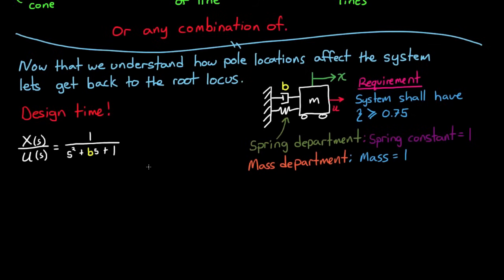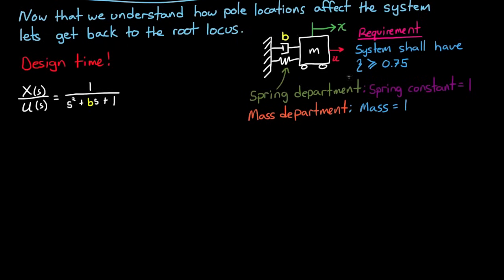Now the root locus method gives us a way to plot how the poles of this system move in the S-plane as we take the unknown parameter, b, and sweep it from 0 to infinity. Now this lecture isn't going to focus on how to draw the root locus plot, just on how to interpret it and use it. Drawing a root locus by hand is useful, however most of the time you'll just use a software package like MATLAB to draw the root locus for you.